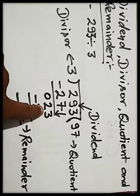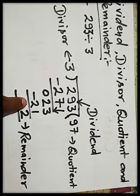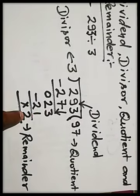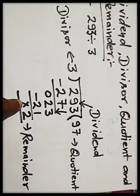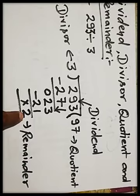Now again, divide this 23 by 3. 3 sevens are 21. Now subtract 21 from 23. 3 minus 1 is 2 and 2 minus 2 is 0 or cross. It means 2 is left.